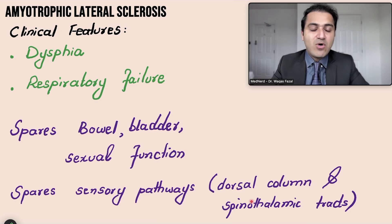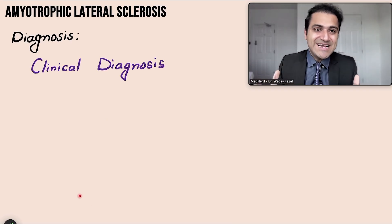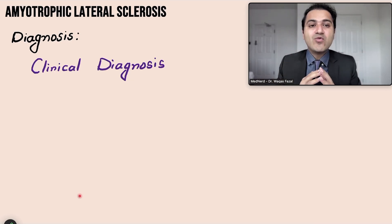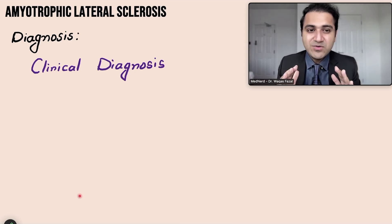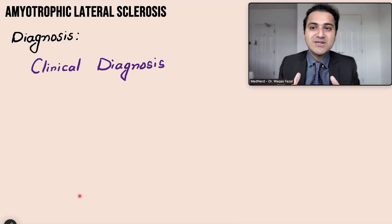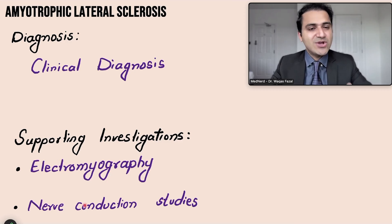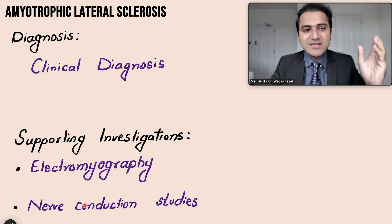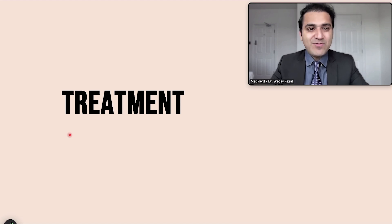Coming to the diagnosis of ALS: ALS is a clinical diagnosis — there is no specific test to diagnose it. The tests we perform, such as MRI, nerve conduction studies, and electromyography, are mainly to rule out other causes of upper and lower motor neuron injury, such as Guillain-Barré syndrome or other nerve damage. It is mainly the clinical examination and ruling out other diseases that establishes the diagnosis of ALS.